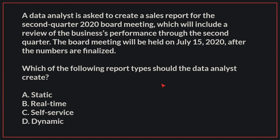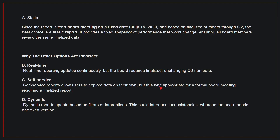A data analyst is asked to create a sales report for the second quarter 2020 board meeting, which will include a review of the business's performance through the second quarter. The board meeting will be held on July 15, 2020, after the numbers are finalized. Which of the following report types should the data analyst create? The correct answer is A: Static. Since the report is for a board meeting on a fixed day and based on finalized numbers through Q2, the best choice is a static report. It provides a fixed snapshot of performance that won't change, ensuring all board members review the same finalized data.